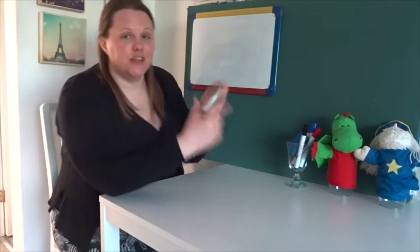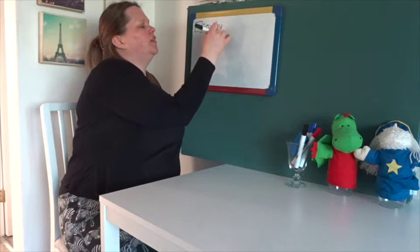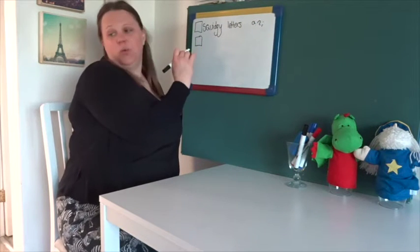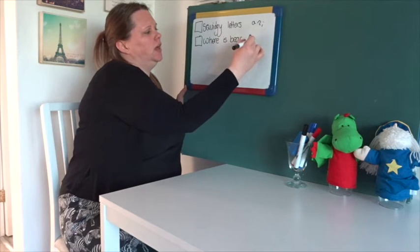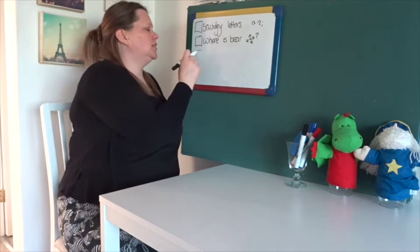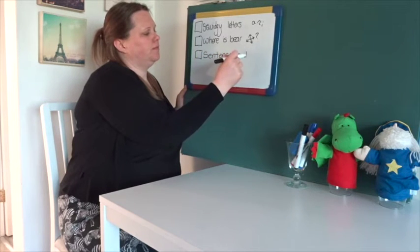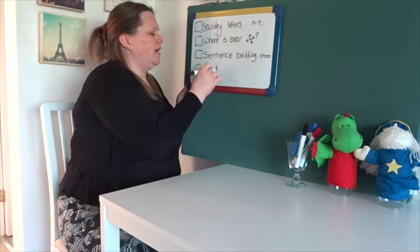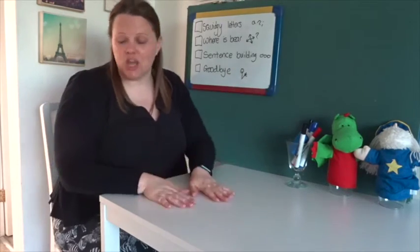Hi, welcome back. Are you ready for today's lesson? Brilliant, well let's get started. So the first thing we are going to do today is squidgy letters, so you might want to have a pen and paper ready, or somebody beside you to have pen and paper. And then we are going to do 'Where Is There?' part two, and again like last time we're going to do it talking first and then we're going to use the same pictures to do some sentence building before we say goodbye.